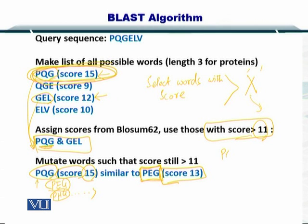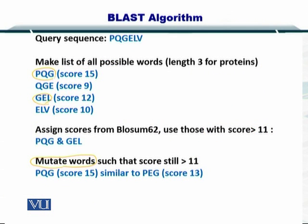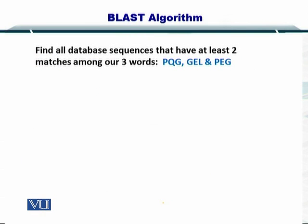So now you have PQG and GEL from the first alignment, and PEG which has a score of 13. GEL had a score of 12, PQG had a score of 15. In this way, you mutate these words for all possible combinations of amino acids, calculate their scores, and select those above the threshold. In the end, we have three words: PQG, GEL, and PEG. We now go to the database with these three words and search it.